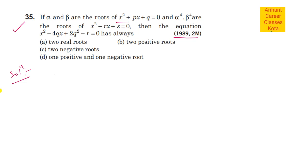If alpha and beta are the roots of a quadratic equation, and alpha to the power 4 and beta to the power 4 are the roots of another quadratic equation, then the equation x² - 4qx + 2q² - r = 0 has always: two real roots, two positive roots, two negative roots, or one positive and one negative root.